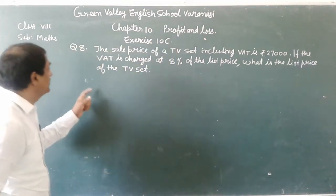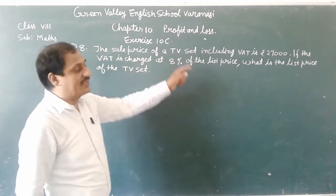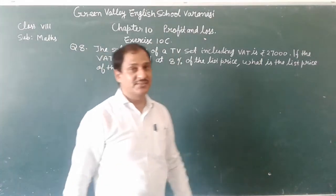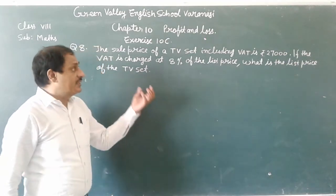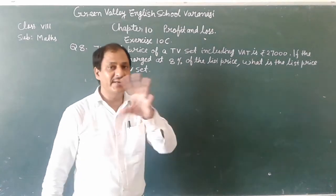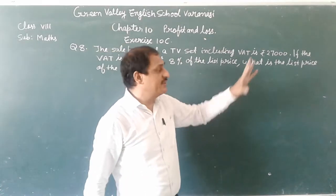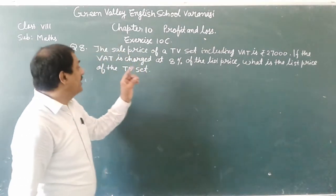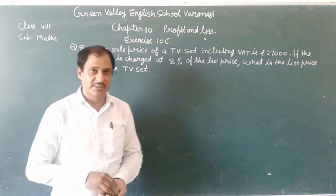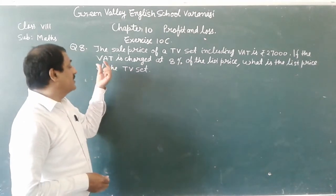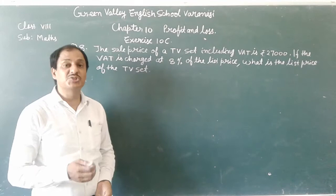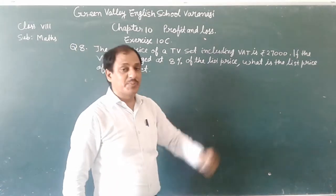In this question, the sell price of a TV set is Rs 27,000. The sell price of the TV set including VAT (value added tax) is Rs 27,000. The VAT is charged at 8% of the list price. What is the list price?